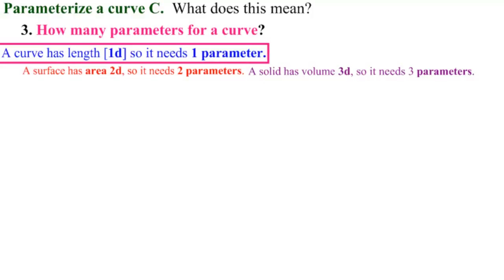The next thing is that the number of components is the dimension where the curve lives. So we need one parameter for a curve, but how many components we have is where the curve lives.